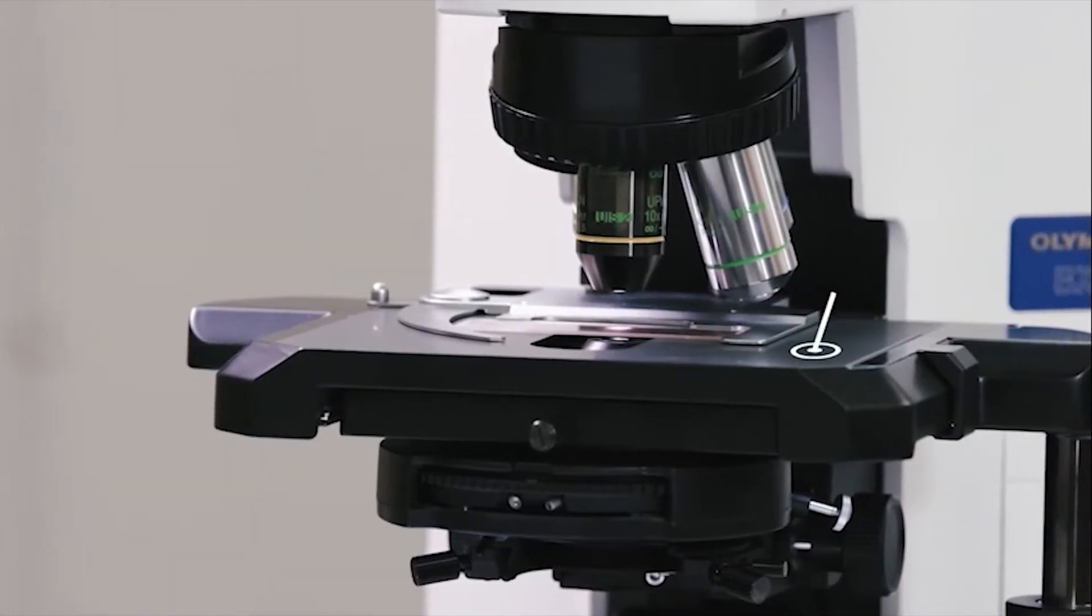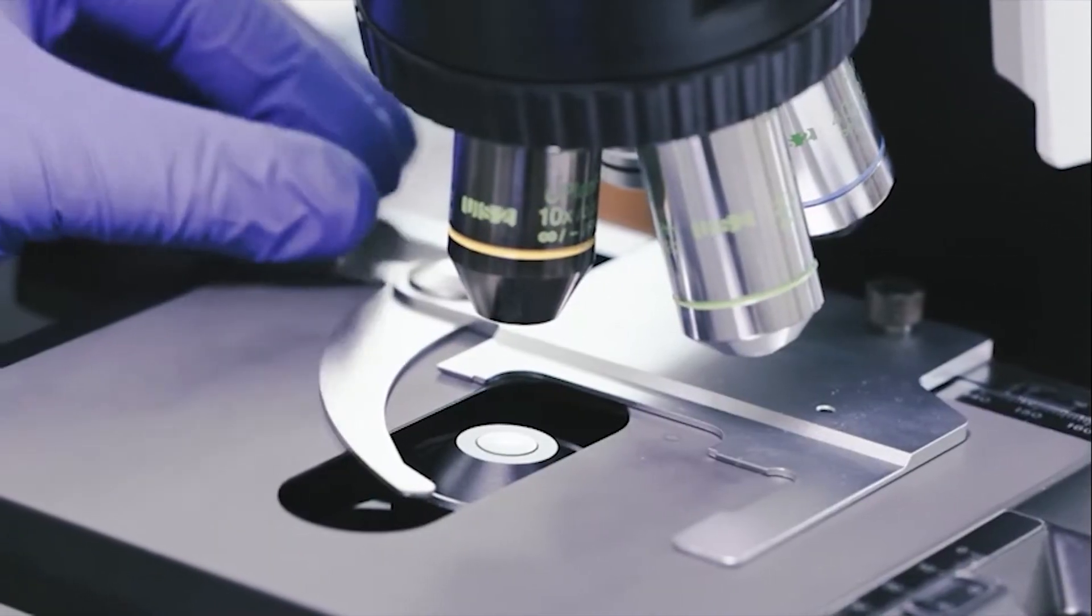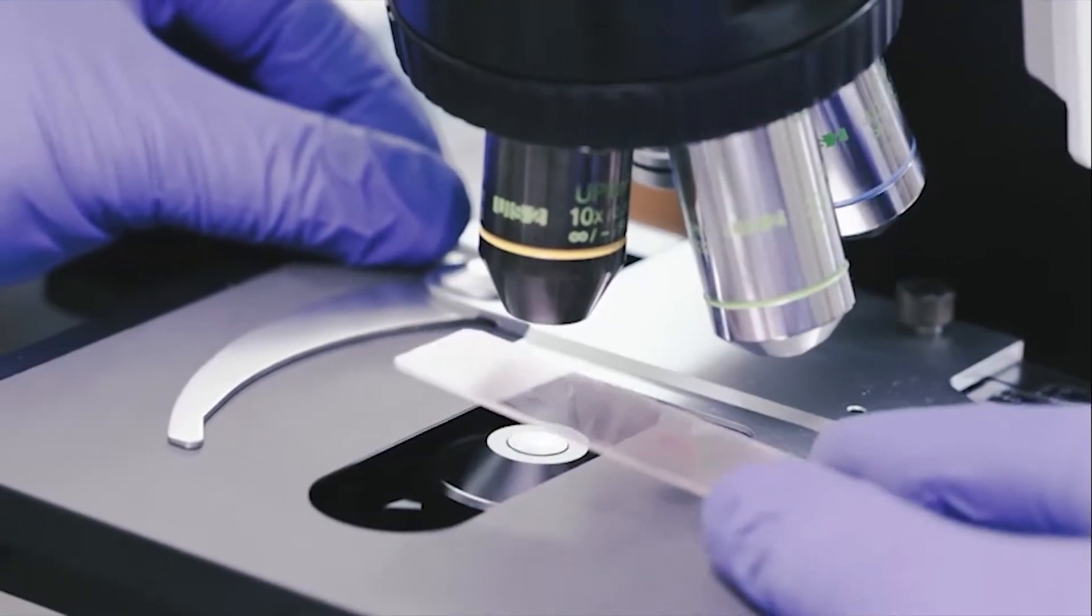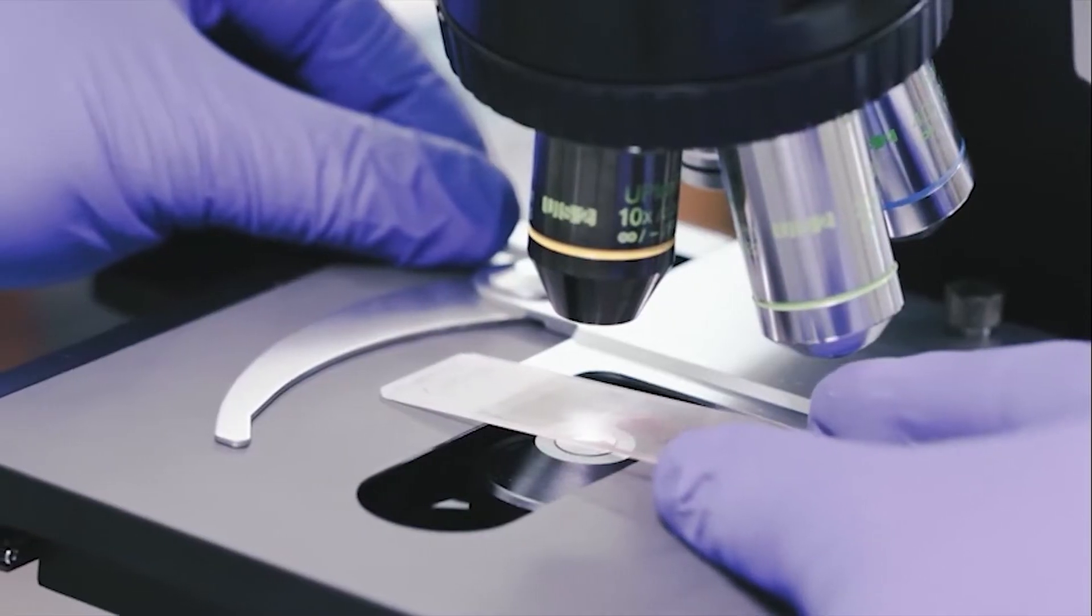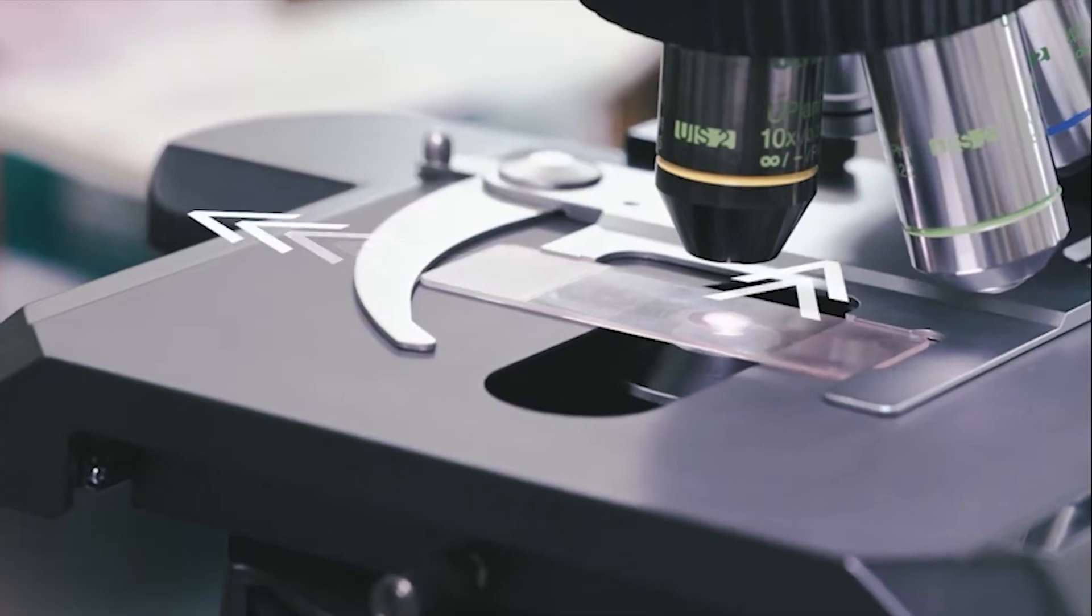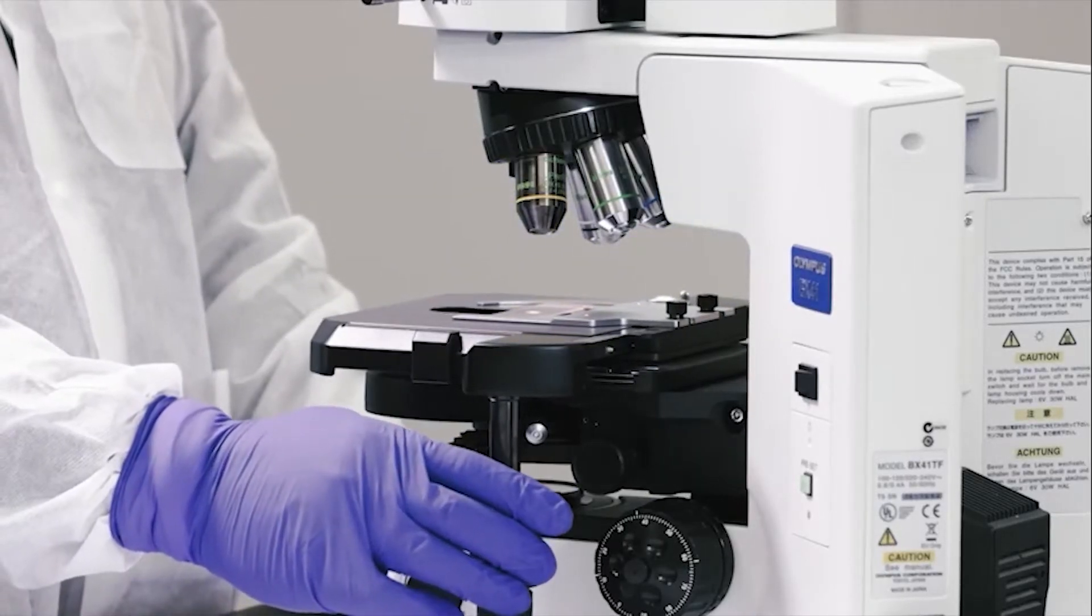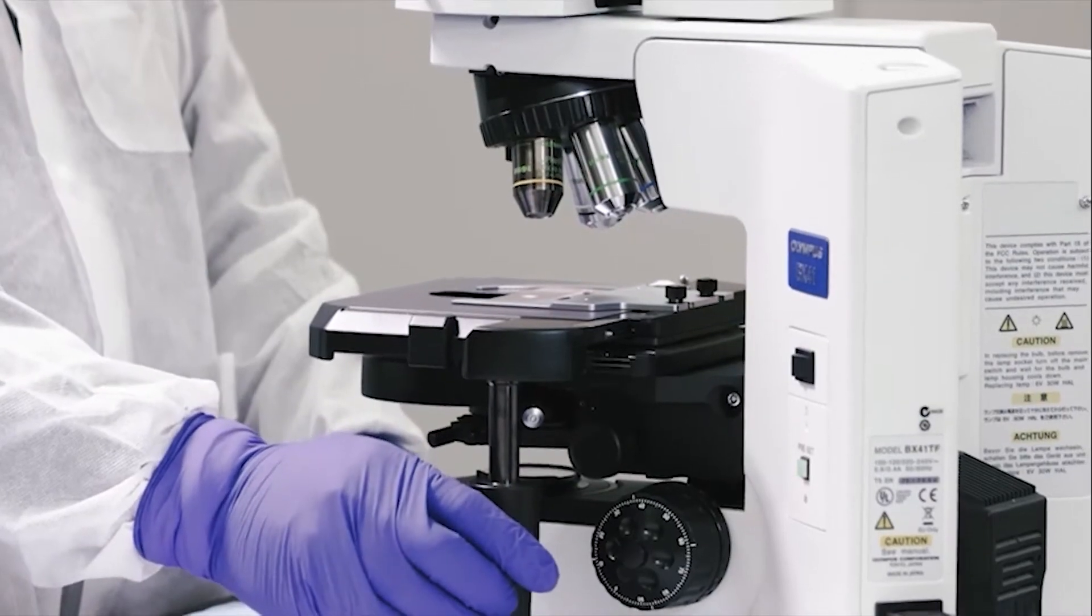Right underneath the objectives is the stage. The stage, with its mechanical clips, holds the slide in place. In order to move the specimen in the field of view, you may need to move the stage right or left or backward or forward. This is accomplished with the stage controls, located under the stage.